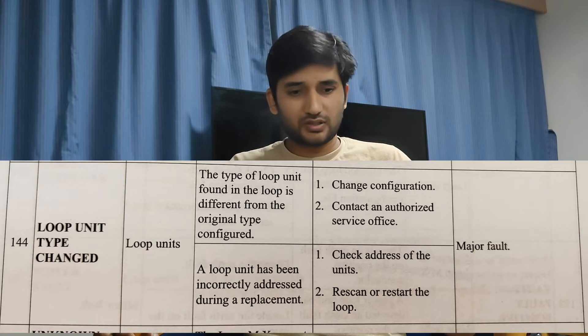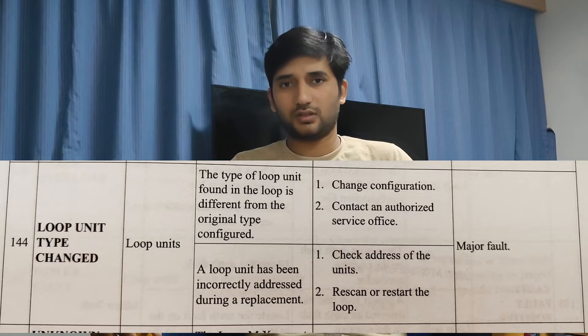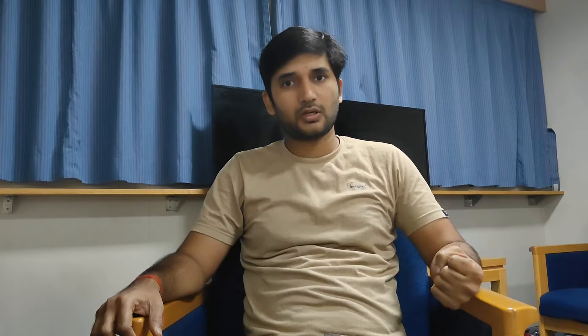The third one is loop unit type change. This is a different alarm which I received on this shift, and the main focus for making this video is this alarm only. I had to follow some steps and I was running around to find the exact problem and how to rectify it. The problem was that there was an old sensor which was giving a no answer problem.